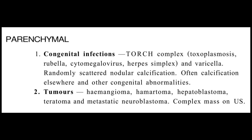Parenchymal causes for liver calcification in fetal or neonatal cases — congenital infections play a vital role. You will see liver calcification with TORCH complex infections such as toxoplasmosis, rubella, cytomegalovirus, herpes simplex virus, and varicella. These produce randomly scattered nodular calcification within the liver parenchyma, often with calcification elsewhere and other congenital abnormalities, as the TORCH complex causes certain congenital abnormalities as well.